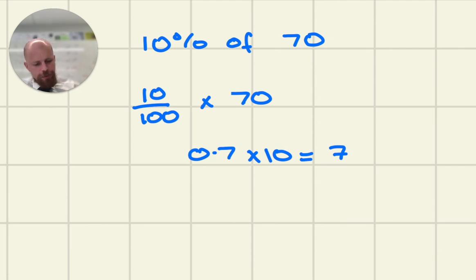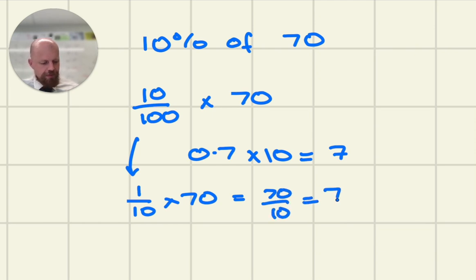However, an easier way of doing it, when you can, is to know that 10 out of 100 is 1 out of 10. So actually, you can just do 70 divided by 10, which is 7 as well. Now, this works every single time, as long as the fraction simplifies.